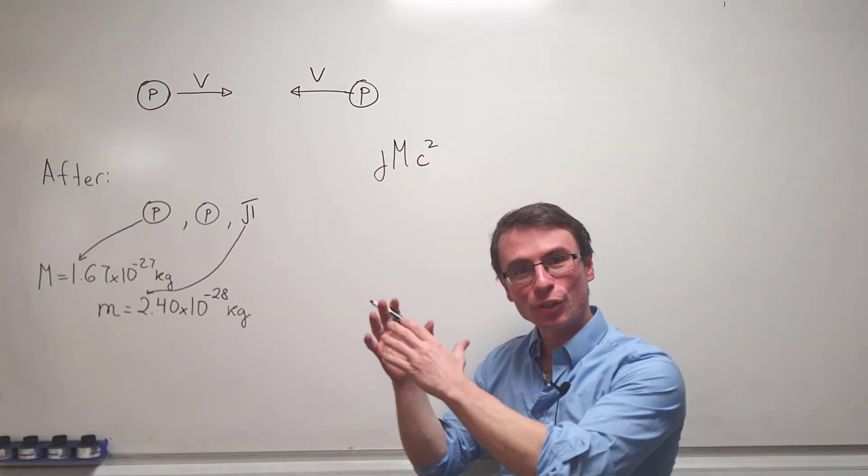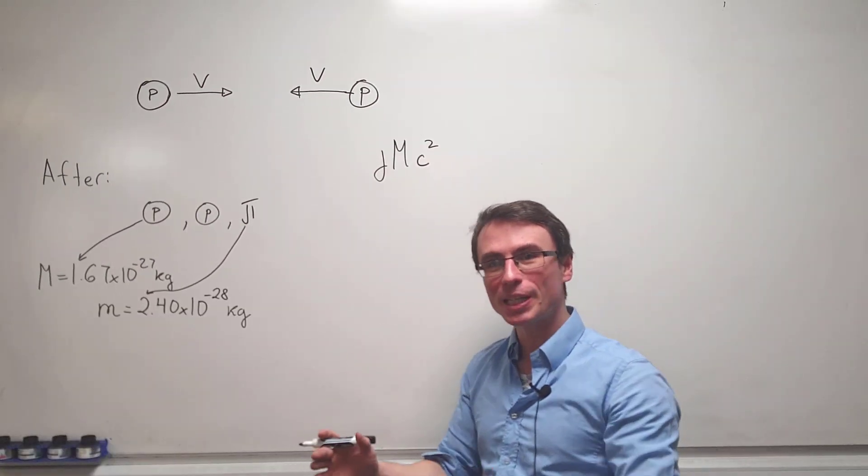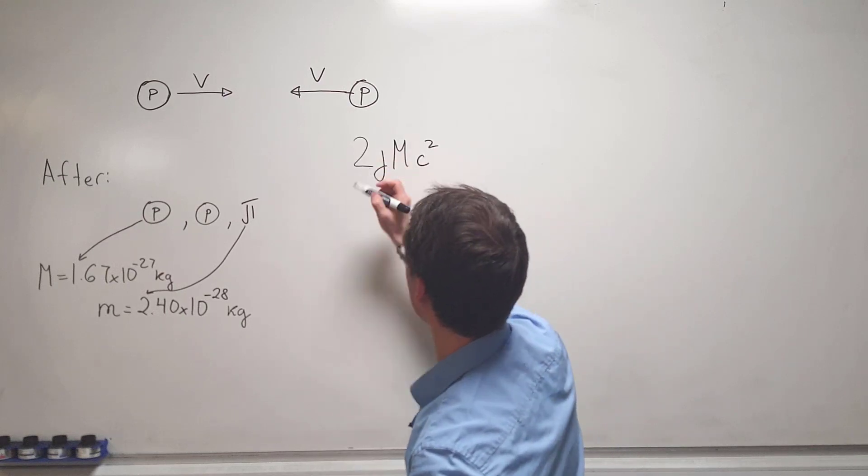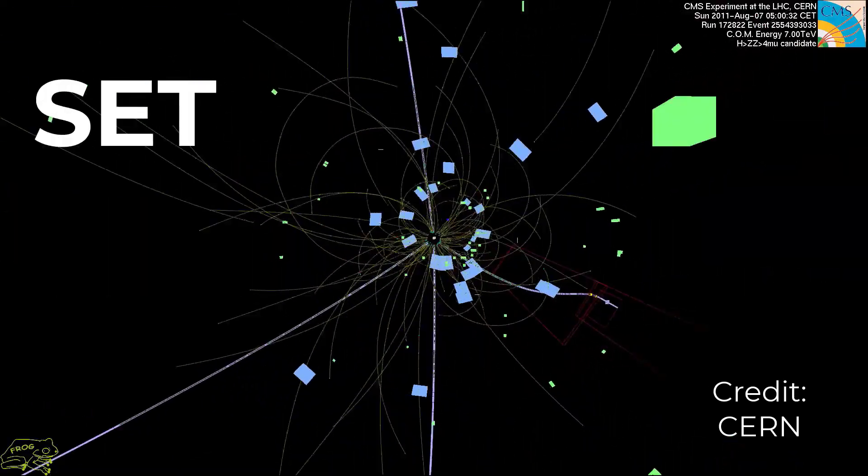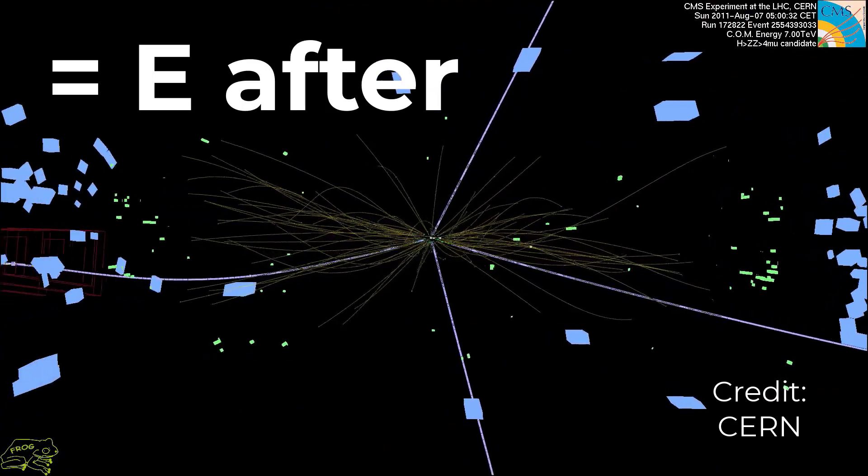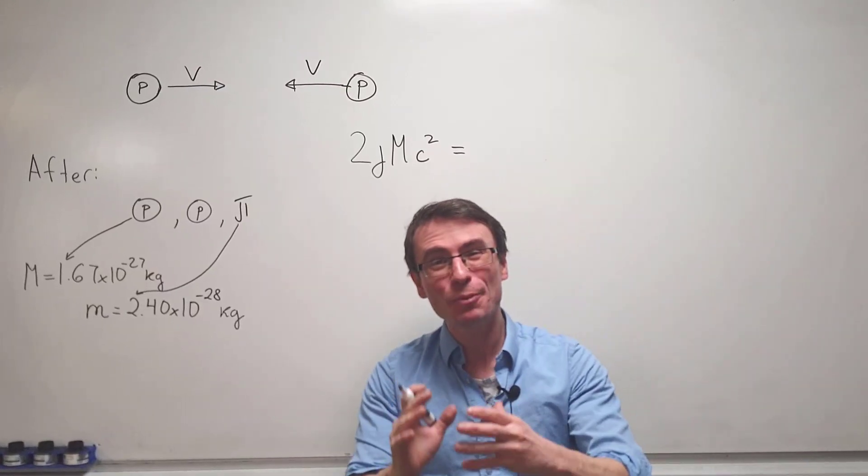Because there are two of them moving at equal speeds before the collision, we're going to have a factor of two. We're going to set this equal to the total energy after the collision, which classically would be zero. However, now we have three particles and each of them has a rest mass.